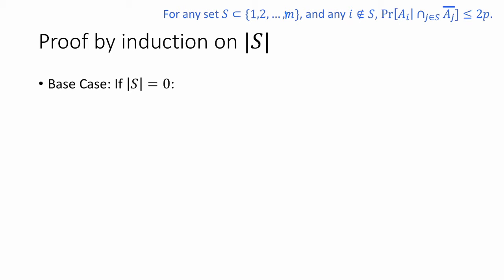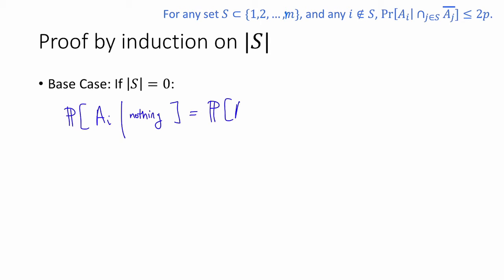We're going to prove this lemma by induction on the size of S. As a base case, if the size of S is equal to 0, then the probability that ai occurs conditioned on all of the events in S not occurring — well, S is empty, so that's conditioned on nothing — this is just equal to the probability that ai occurs, which by the assumption of the Lovász Local Lemma is less than or equal to p, which in particular is less than or equal to 2 times p. So the base case is proved.